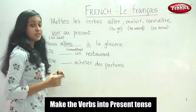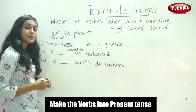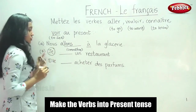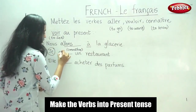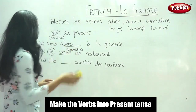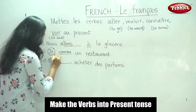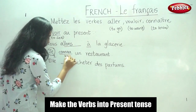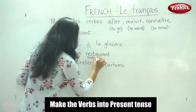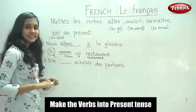Do you remember the conjugation for Connaître? We learned the conjugation. The subject pronoun in this sentence is 'je.' For 'je,' the conjugation of Connaître is 'connais.' So your answer is: Je connais un restaurant — I know a restaurant. The meaning is right, so your answer is correct.